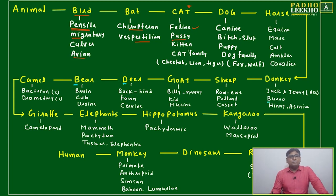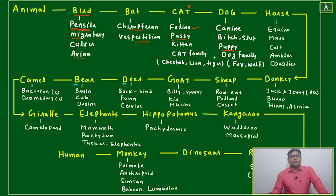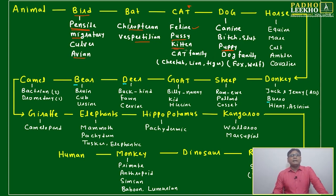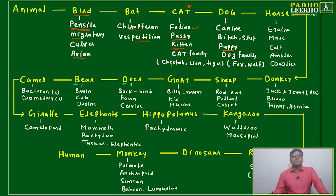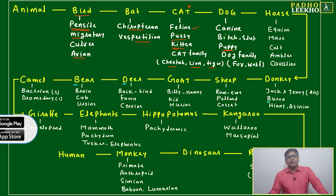Pussycat is a small domestic word for cat, like dog's domestic name is puppy — similarly for cat it is pussycat. Kitten means a small cat, or you can say baby cat. That is kitten.